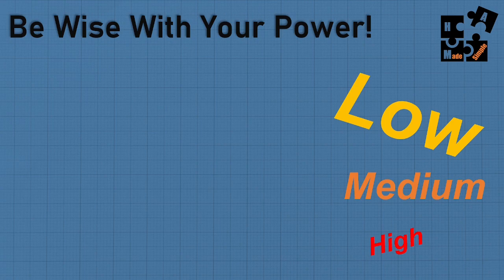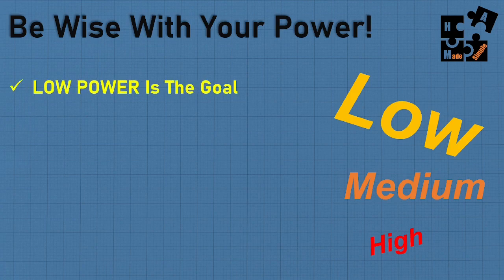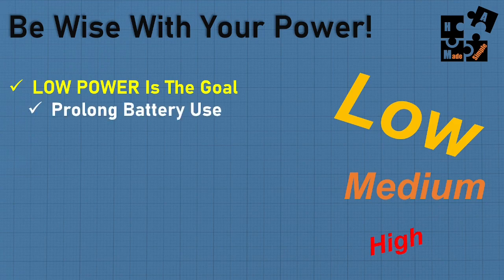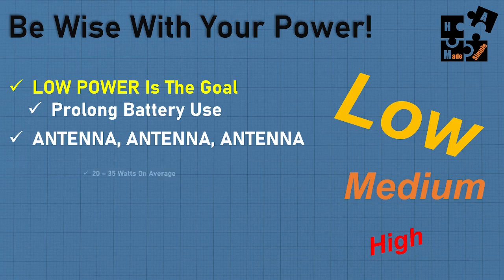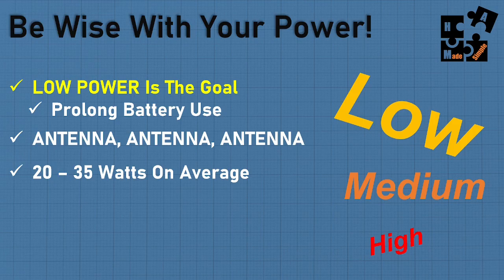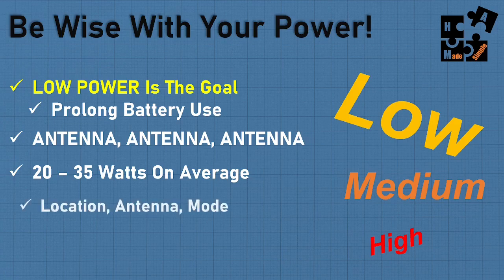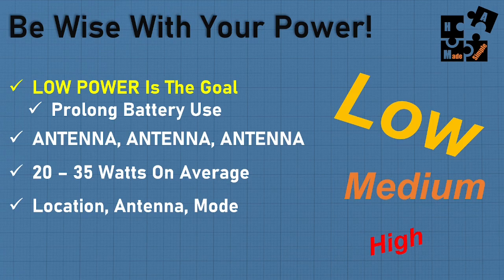As we wind up — and I'll go more into this next week step-by-step — be wise with your power. You don't want to be running medium or high power. Low power is the goal; that's why you want to do HF Digital. Keep it around 20 watts or lower if you can. Start at 15 watts and prolong your battery use. Make sure you have a good antenna — the antenna is probably the most important tool in your whole setup. High-end equipment with a bad antenna means a bad system. A low-end system with a great antenna gives you a decent system. So antenna is where you need to focus.